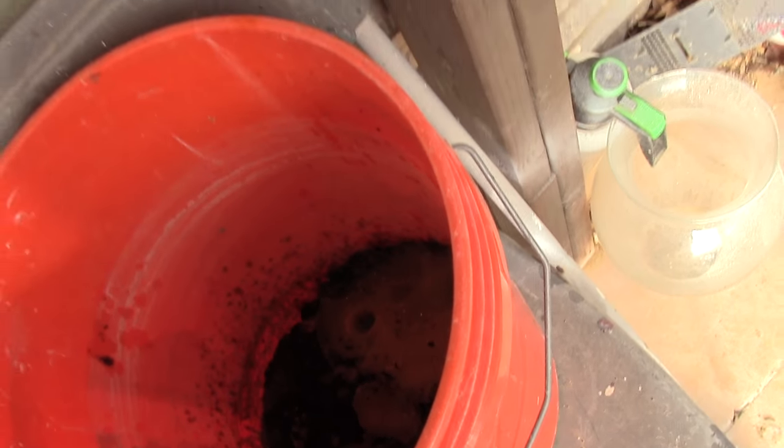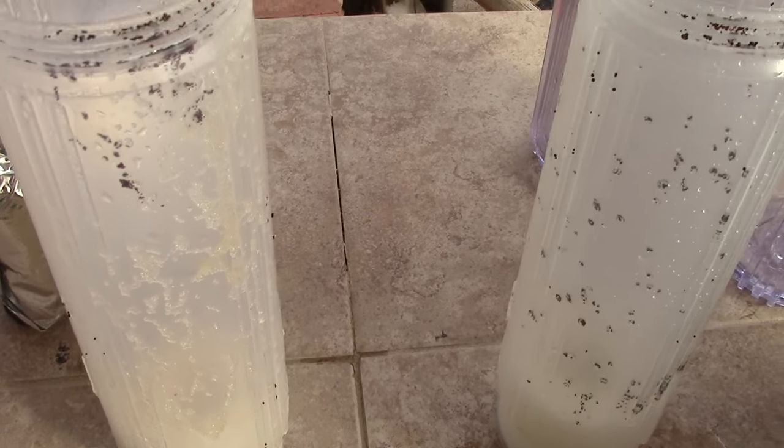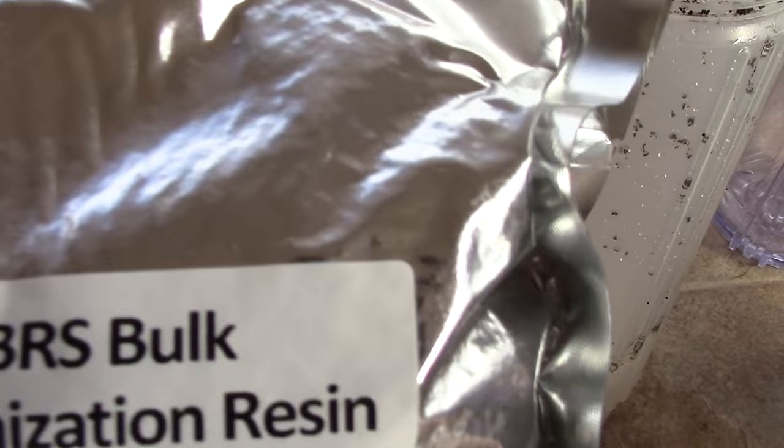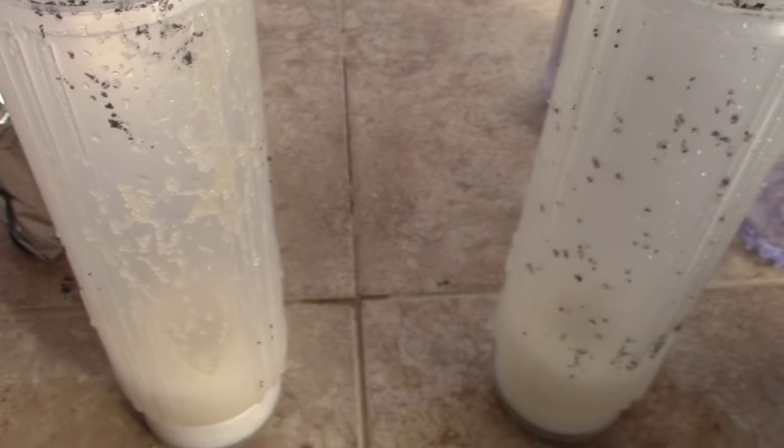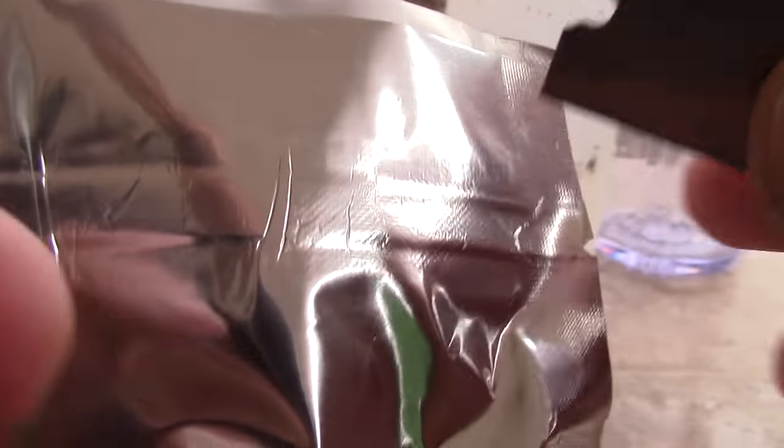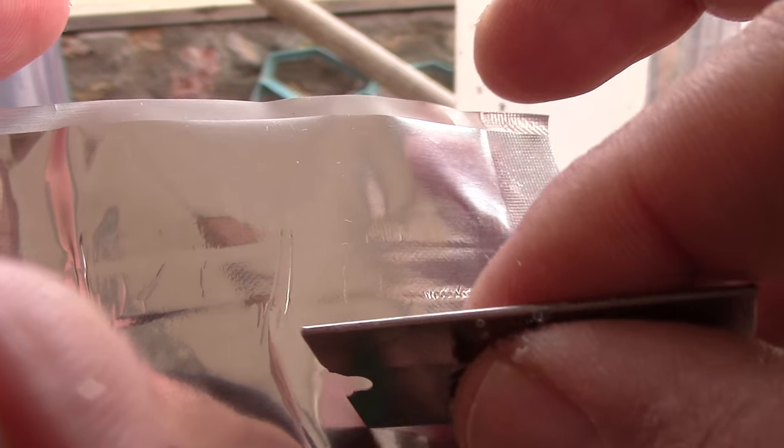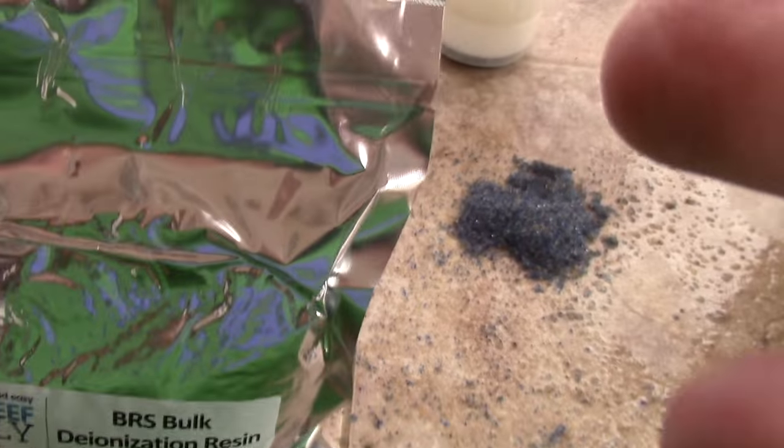Now what the DI resin does is it makes your water super zero, all the way down to zero, because your RODI without it is still going to come out with some TDS. Now this stuff says it's nuclear grade, but what I'm looking for is to make sure that this stuff is airtight, and what I use is a little razor. I open up the seal so I can just cut the corners.